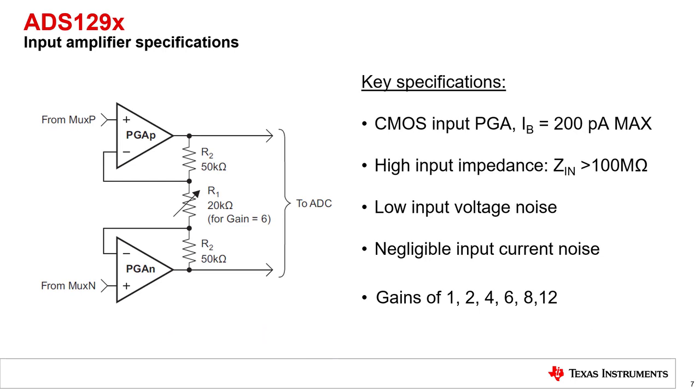Let's take a look at the integrated PGAs and make sure they match what we expect from an ECG front-end. The PGAs on the ADS129X devices are CMOS amplifiers. This means they have a very low input bias current of 200 picoamperes datasheet maximum, very high input impedance of greater than 100 megaohms. The voltage noise is also extremely low and the current noise is negligible, making them capable of measuring small ECG signals.